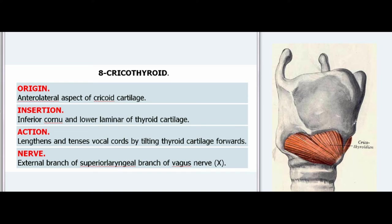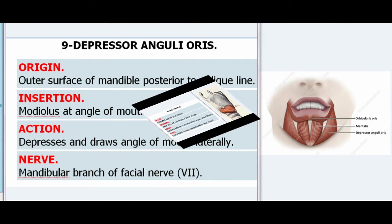8. Cricothyroid. Origin: Anterolateral aspect of cricoid cartilage. Insertion: Inferior cornu and lower lamina of thyroid cartilage. Action: Lengthens and tenses vocal cords by tilting thyroid cartilage forwards. Nerve: External branch of superior laryngeal branch of vagus nerve (X).